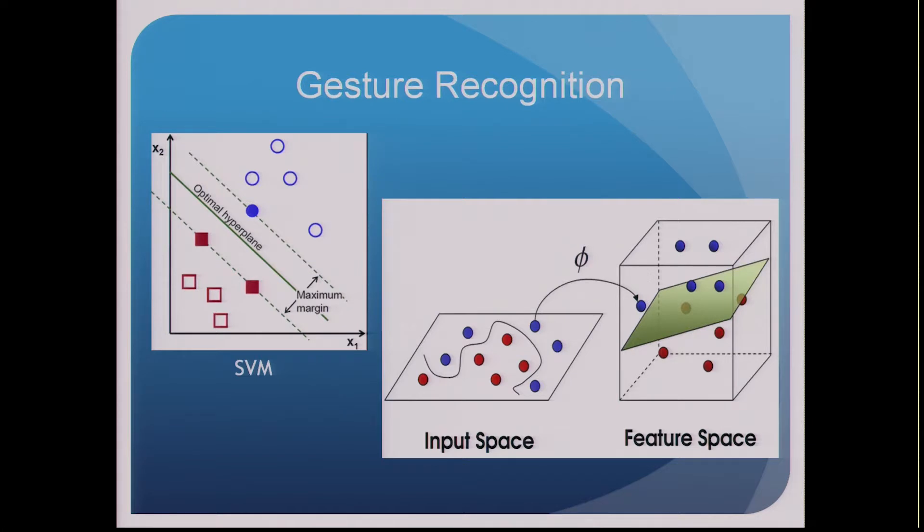So a support vector machine is a learning algorithm used to solve classification problems, and a kernel is just a function that transforms information from your input space to your feature space.